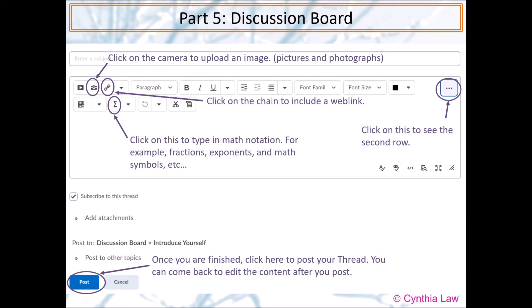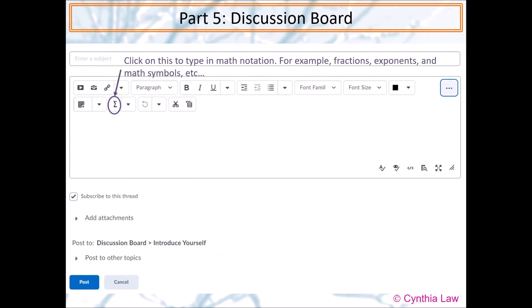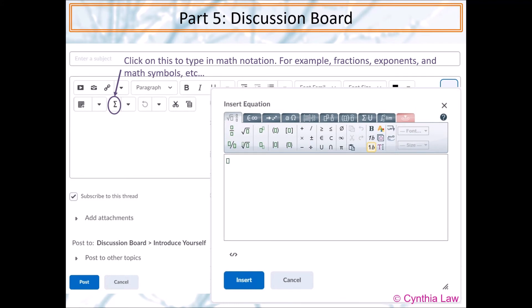You can come back and edit it after. To use math notation, click on the sigma symbol and you will see a pop-up window like this. If you want to type fractions, choose the symbol. This one lets you type a square root. This one lets you type an exponent.